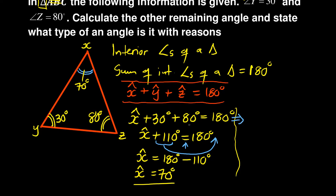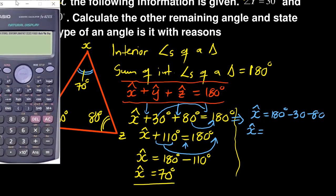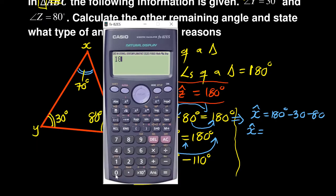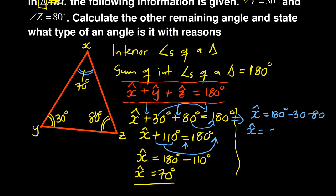...if you wanted to solve for X at this stage, you could have taken 30 and 80 to the other side so X equals 180 minus 30 - remember, it's positive so it changes to negative - also minus 80. So X equals 180 minus 30 minus 80. This allows you to get your answer directly, much quicker, which is 70 degrees.